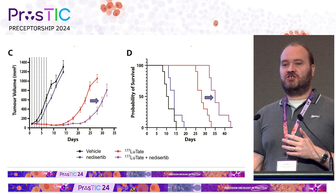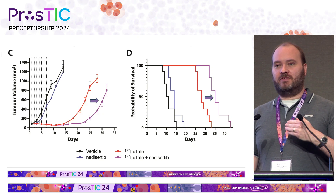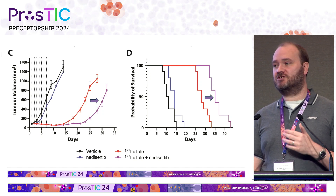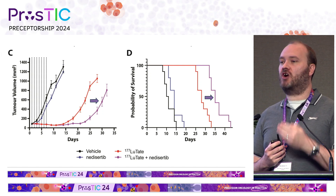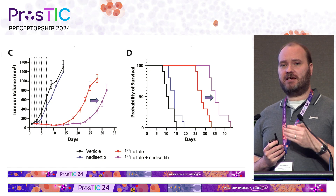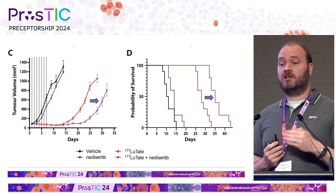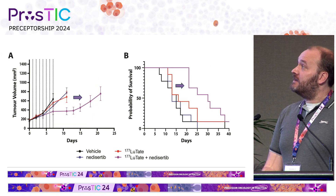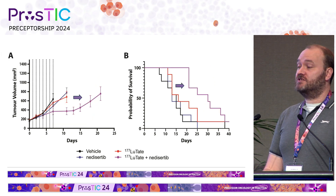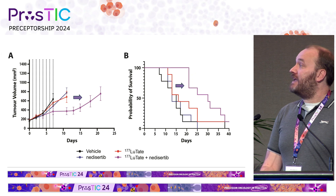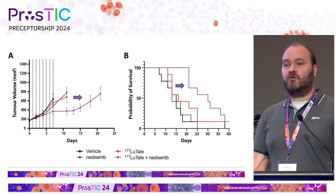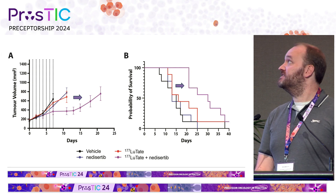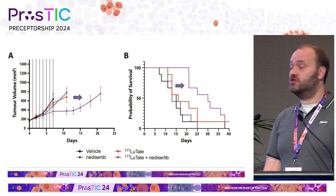We don't want to just improve responses to effective radionuclide therapy — one of the things we'd like to do is convert those patients with primary resistance. How can we take tumors that don't respond well to radionuclide therapy and push them further? This example shows a tumor that isn't responsive to lutetate therapy, but when we add this DNA-PK inhibitor, we are now able to convert this tumor from lutetium-insensitive to lutetium-sensitive and see this increase in tumor survival.